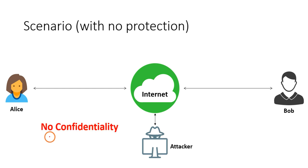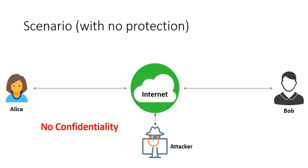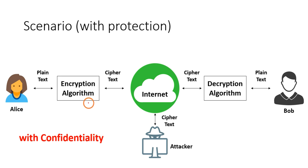This scenario has no protection because the attacker is able to read the messages being communicated between Alice and Bob. This represents a lack of confidentiality. Confidentiality means preventing unauthorized access, but here the attacker is able to read everything.